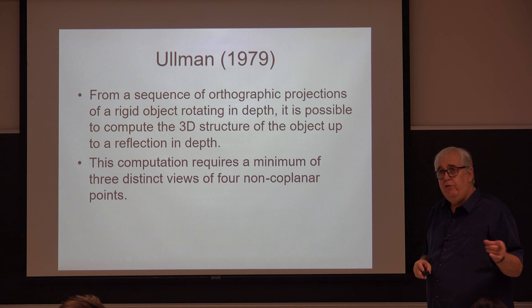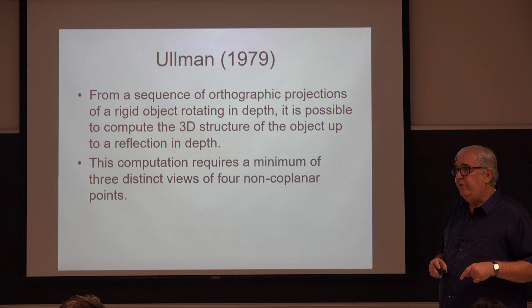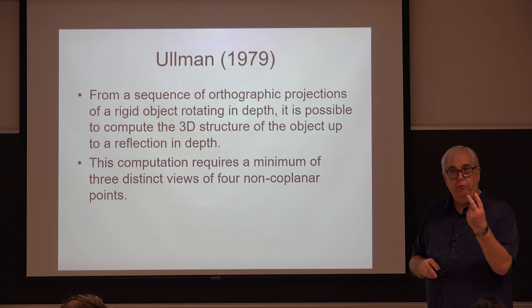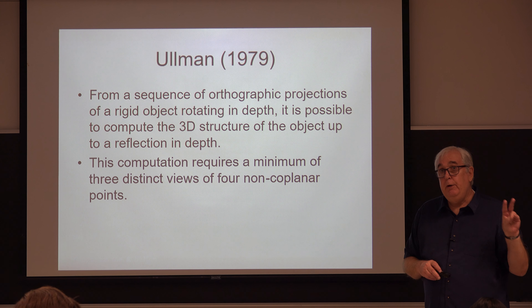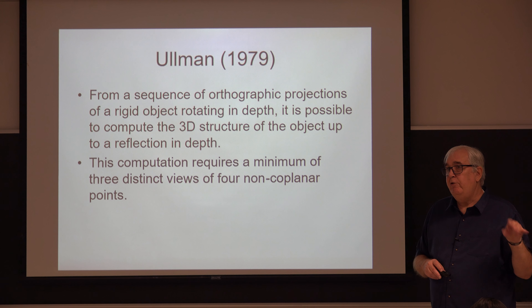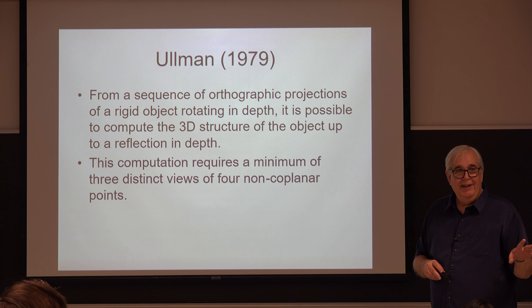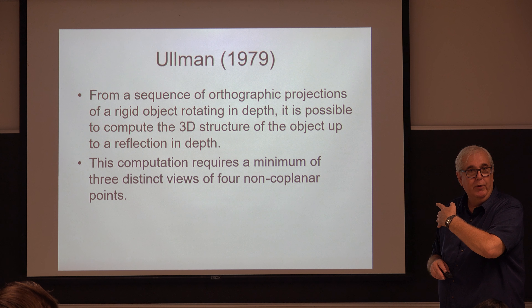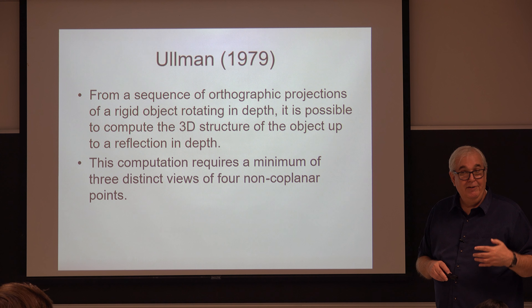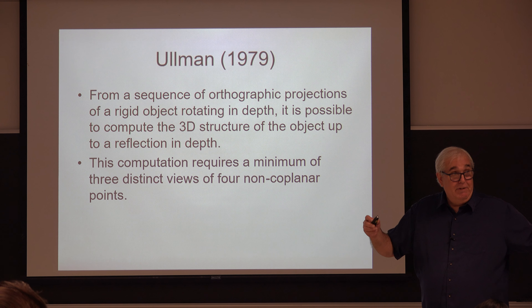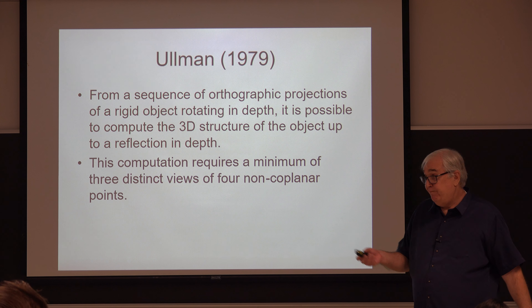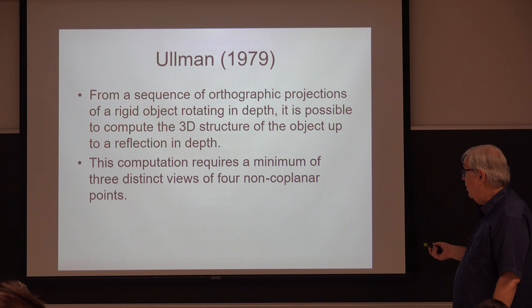The one thing I did differently from all the other experiments was I included a condition with only two views. Now remember, the theory says that with just two views it should be impossible to make judgments about 3D structure — you have to have at least three. That's a mathematical proof.